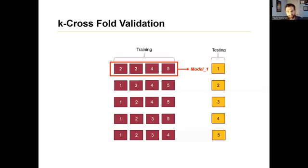So getting back to this example, folds 2, 3, 4, 5 are used to train model 1. Model 1 is tested on fold 1. Likewise, 1, 3, 4, and 5, they're used to train model 2. Model 2 is tested on test data 2.